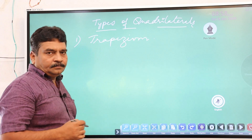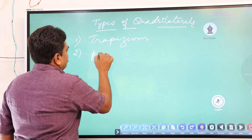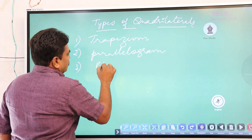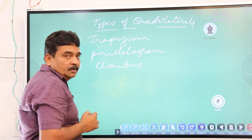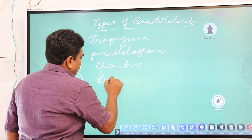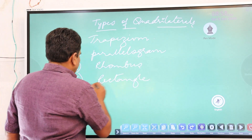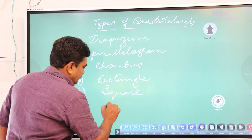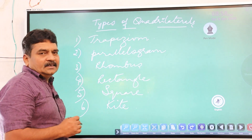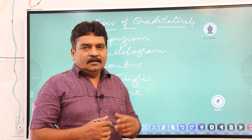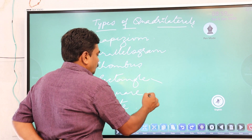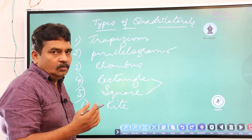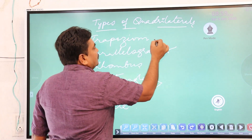The six types of quadrilaterals are: first, trapezium; second, parallelogram; third, rhombus; fourth, rectangle; fifth, square; and sixth, kite. Note that rectangle and square are special cases of parallelogram — I'm going to explain how. Let's start with trapezium first.